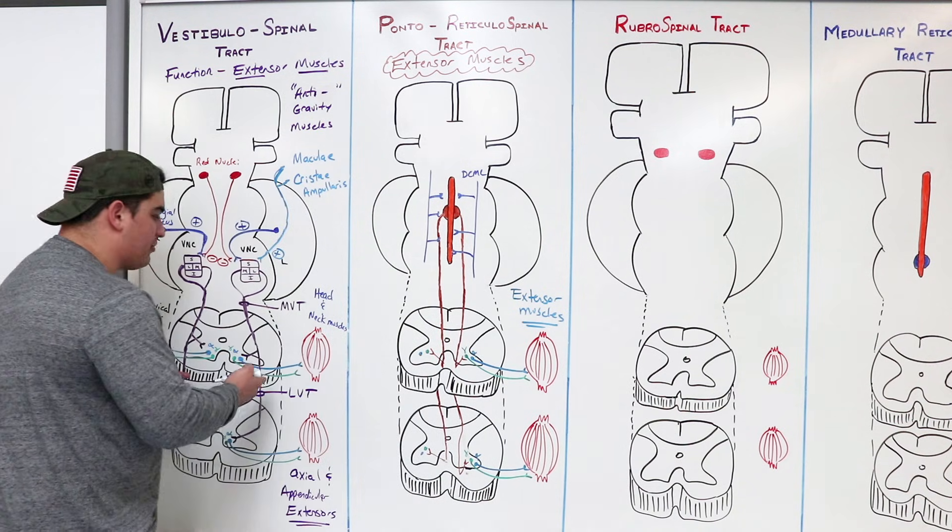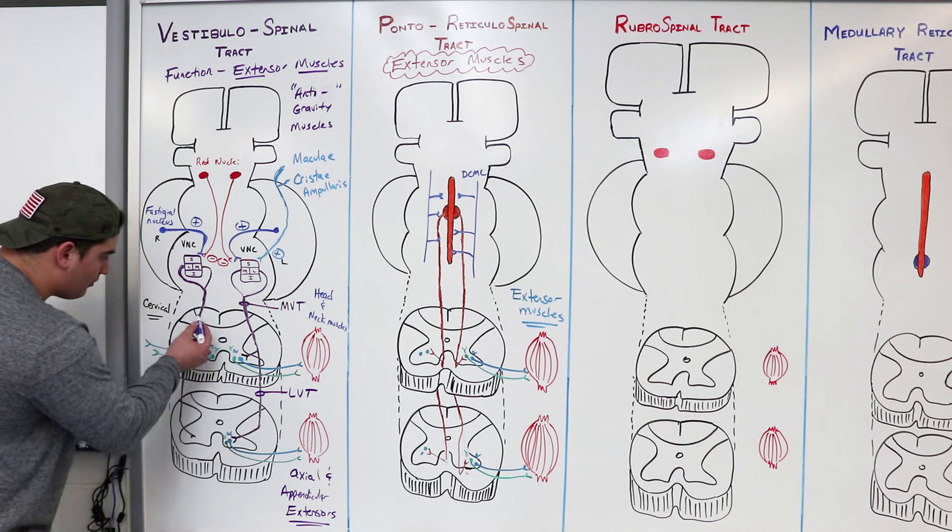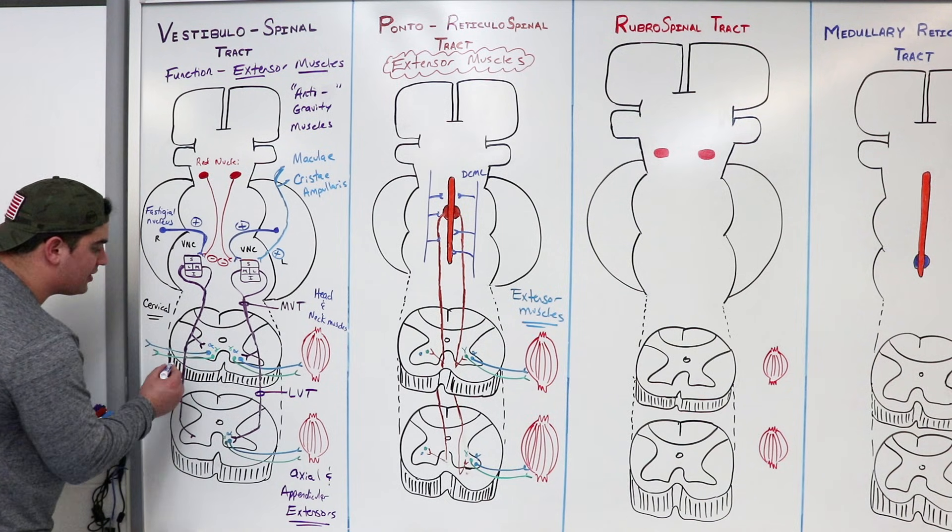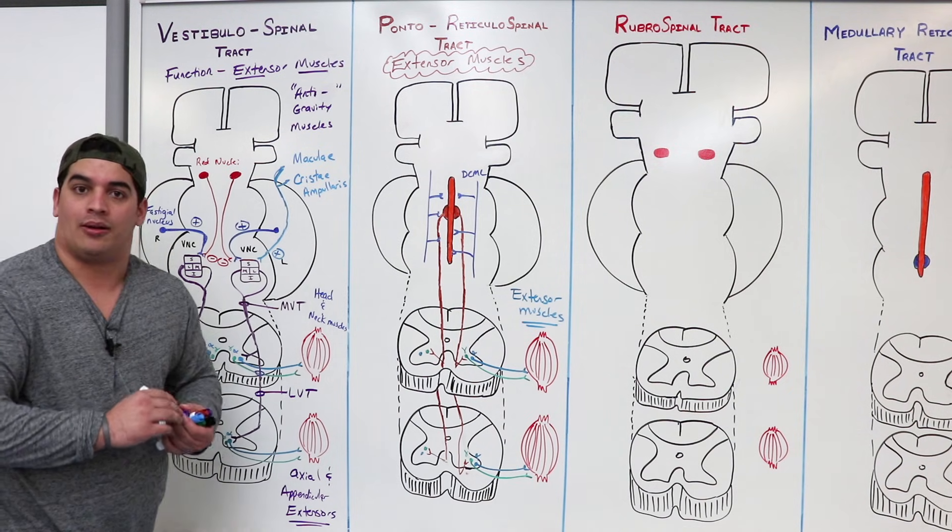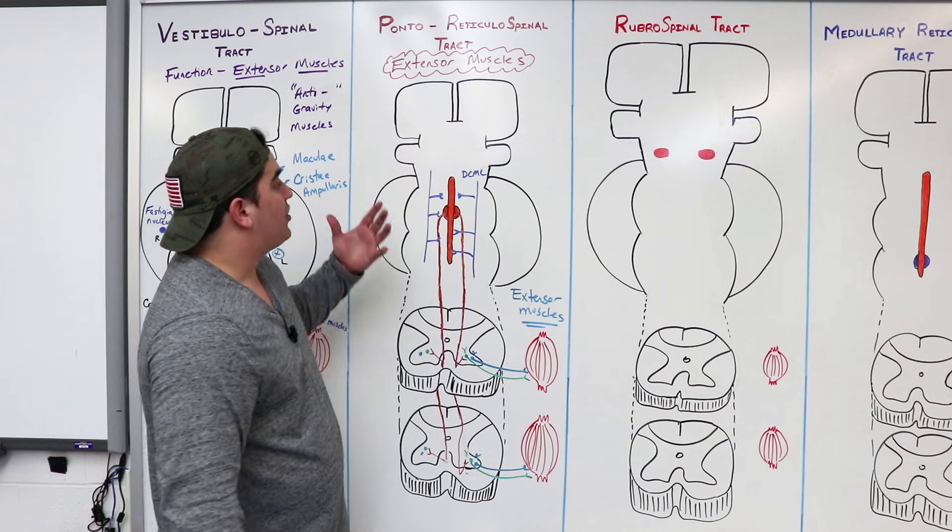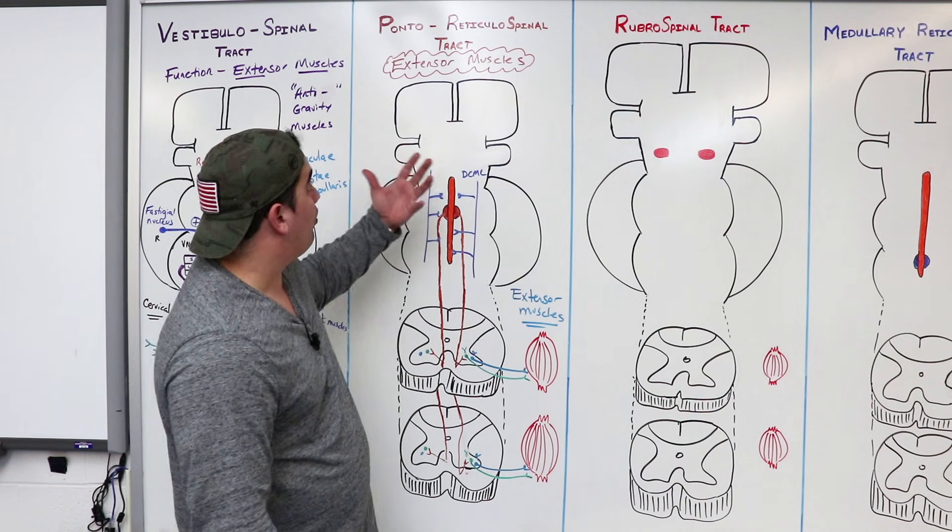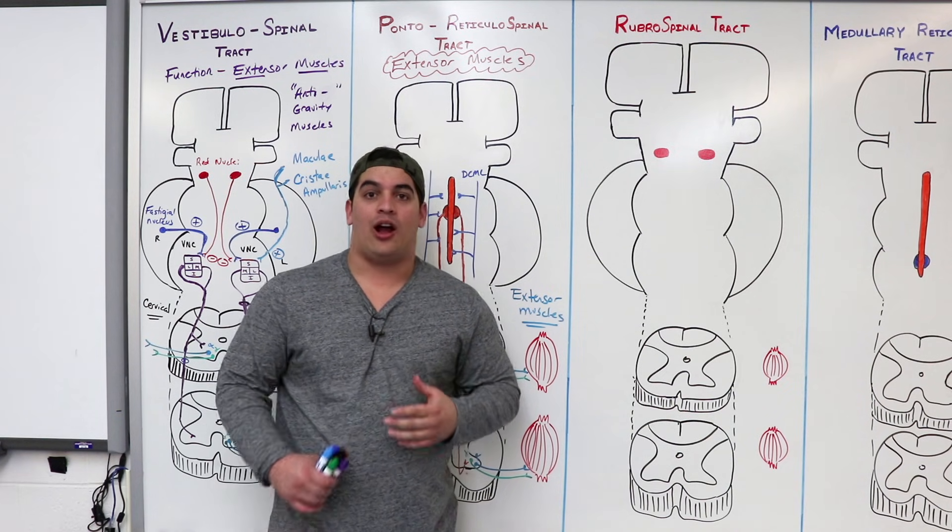Now I didn't mention it in the vestibulospinal tract, I should have done that, I wasn't specific enough, but remember, these actual vestibulospinal tracts, they're also going within the anterior or ventral white column, so don't forget that also. So now, now that we know that, we've pretty much covered everything we need to know about the pontor reticulospinal tract, I hope it made sense.